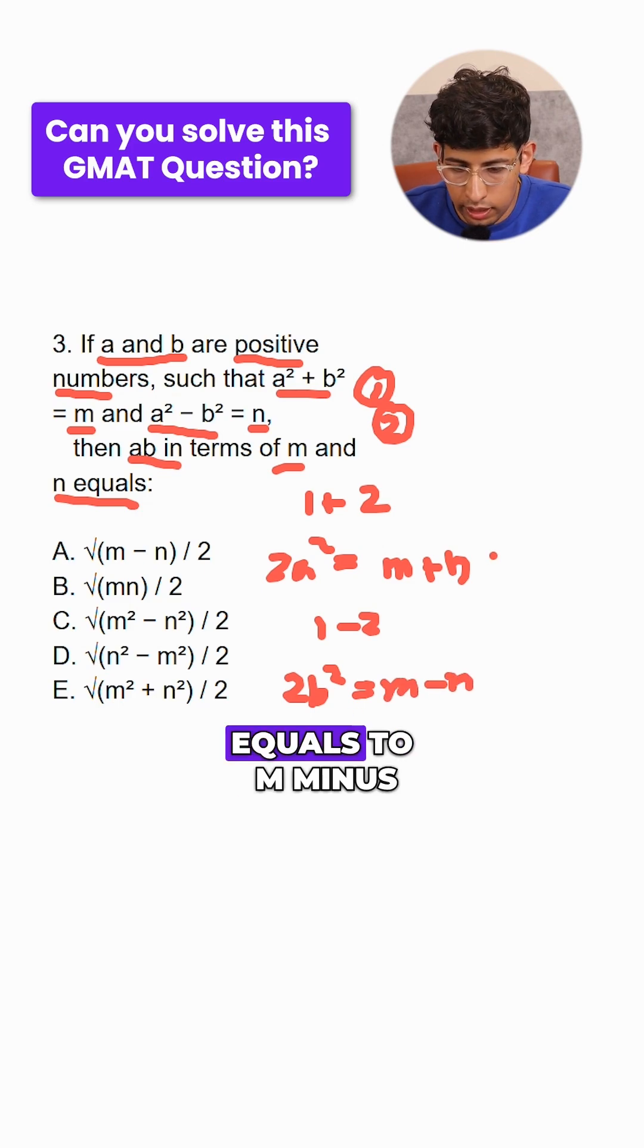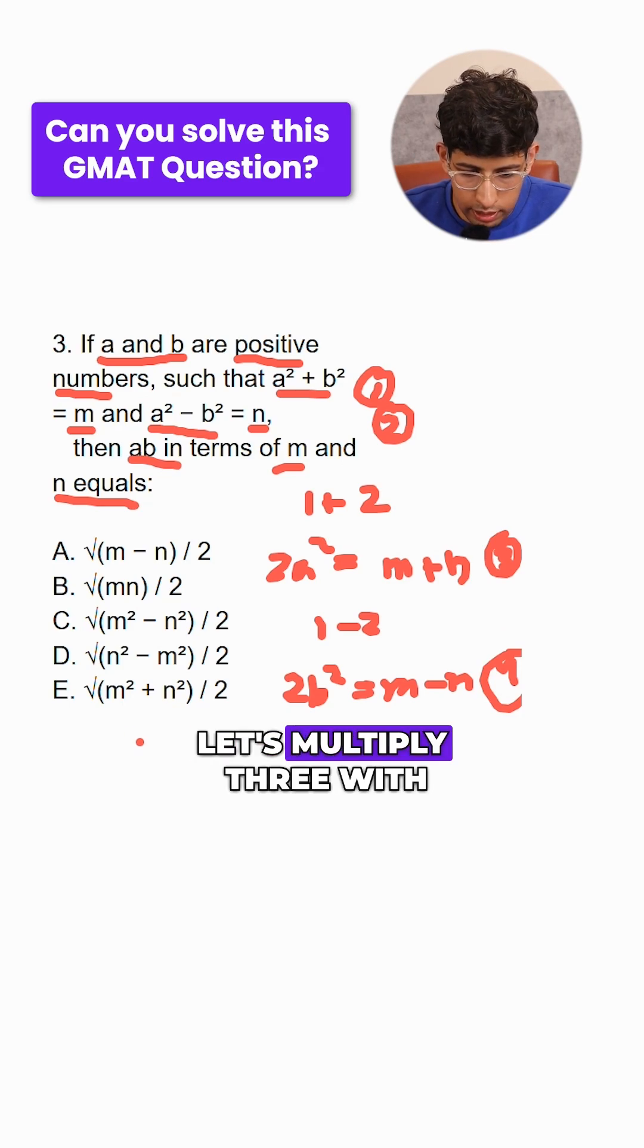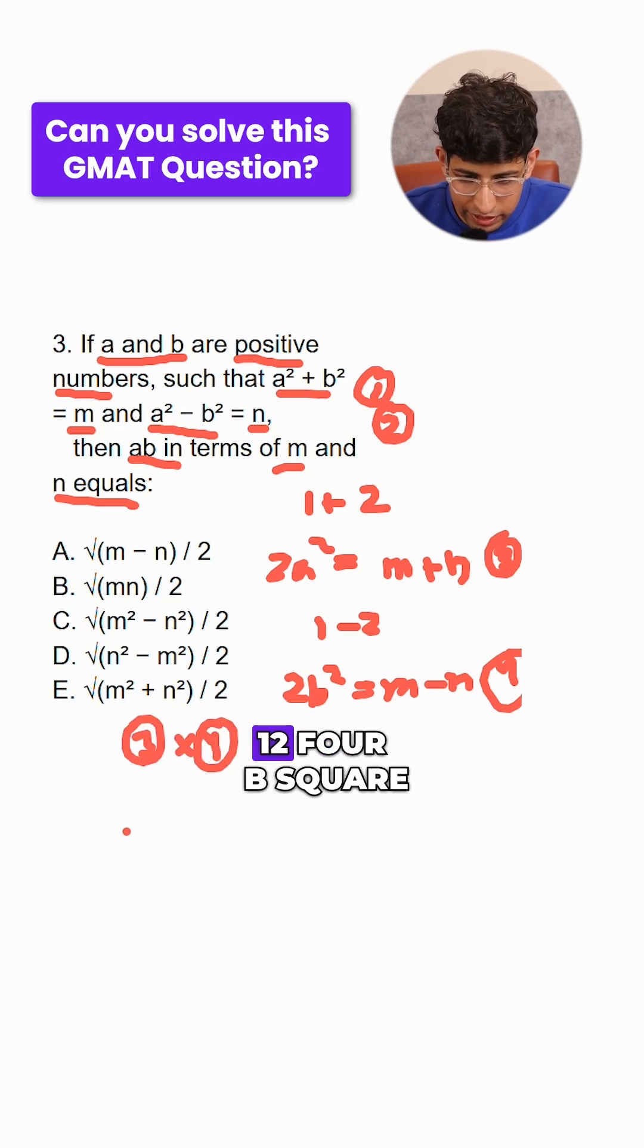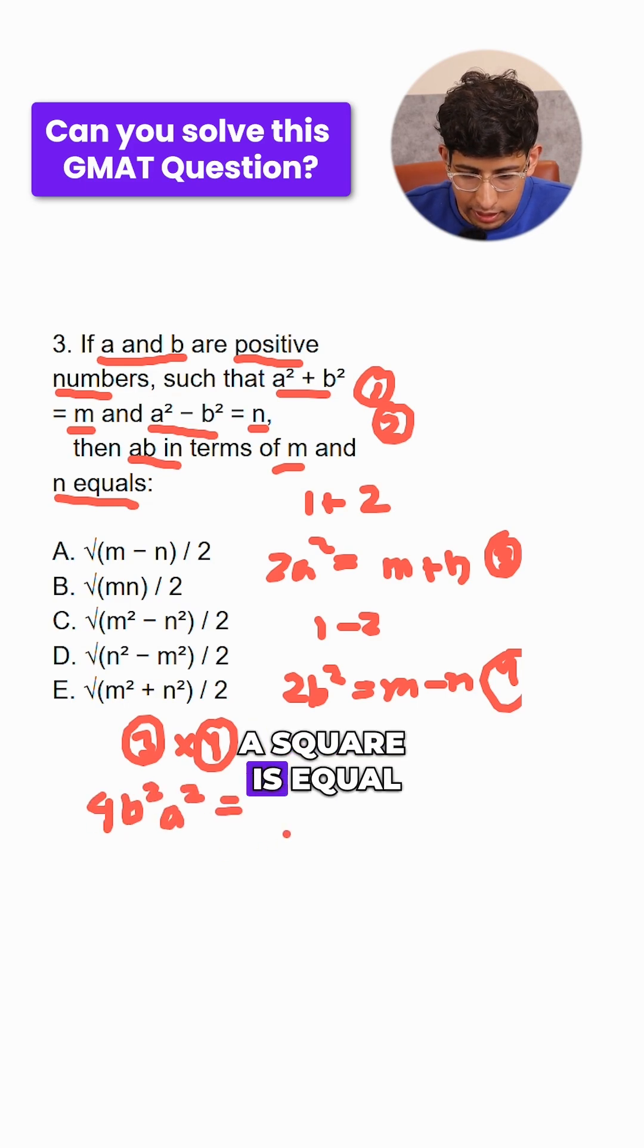Now we have equations 3 and 4. Let's multiply 3 with 4. These are our equations - don't mistake them. So 4a²b² = m² - n².